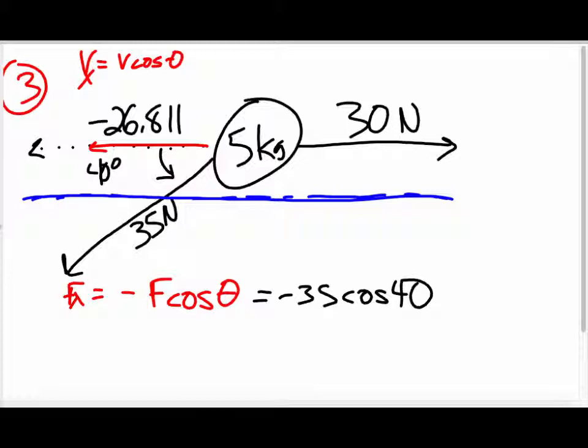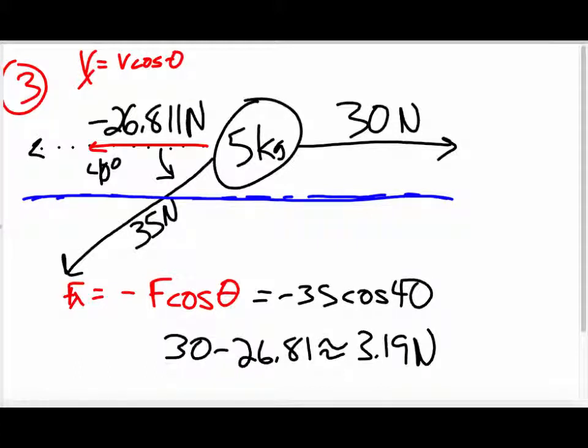So now, what's the overall force? I have a force going in this direction of 30, and a force going in this direction, and it's not moving up or down. And I believe the question even says, what is the horizontal acceleration? What would be the acceleration in this case? So basically, I'm going to say 30 minus 26.81, and it's approximately 3.19 newtons, right? Because this is in newtons, this is in newtons, this whole thing is in newtons, right?